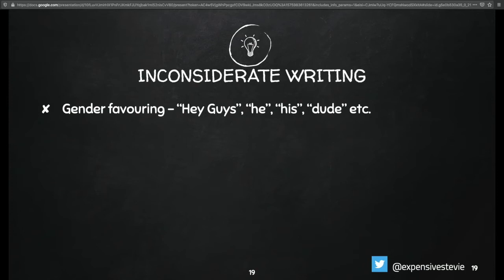Let's go to inconsiderate writing. Gender-favorite phrasing is probably the one we're quite used to hearing about, and the one thing everyone tries to avoid. But it's still there — a lot of docs still have it. If you're involved in open source projects, please go back and check. Try as much as you can to avoid gender-favorite phrases and avoid race-related phrases as well.